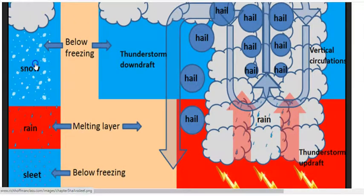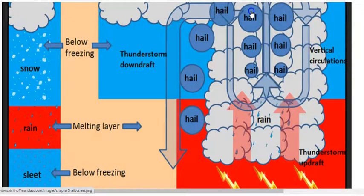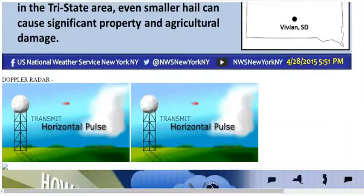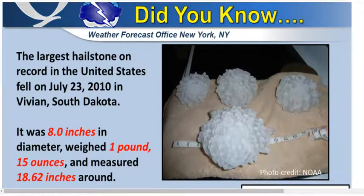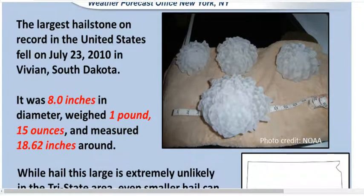Sleet starts off as snow, melts and refreezes. Hail starts off as rain, gets pushed back up into the atmosphere, refreezes, falls down, melts again, pushed back up, falls down, pushed back up — and eventually when it's heavy enough, comes back down to the ground. So hail and sleet are both ice, but they are formed very, very differently. We can get very large hailstones — this one in South Dakota was eight inches, which is pretty dangerous.